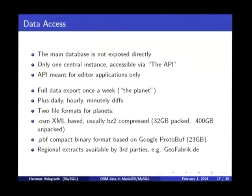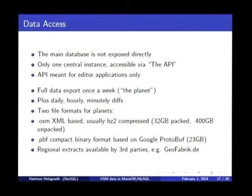This is the main database where all the primary data is stored, and it's the database you modify when you use one of the editor applications. It is optimized for that purpose, so you won't even get direct access to the database or any direct dumps. You only get access via a web API that the editors use to download certain parts of the map and upload changes. For everything else, there is what we call the planet file — a set of large files created from the main database once a week. Originally there was an XML-based format, but now it has grown so big: the current exports are 400 gigabytes of uncompressed XML, or 32 gigabytes compressed.